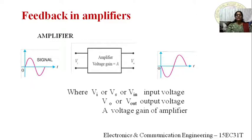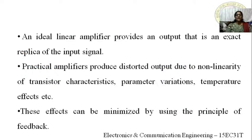The CE amplifier is the most commonly used amplifier type. An important point about the CE amplifier is that the output signal has a 180-degree phase shift with respect to the input signal. As shown in the figure, we apply a sinusoidal voltage and get an amplified version with 180-degree phase shift. An ideal linear amplifier provides an output that is an exact replica of the input signal, but practical amplifiers produce distorted output.